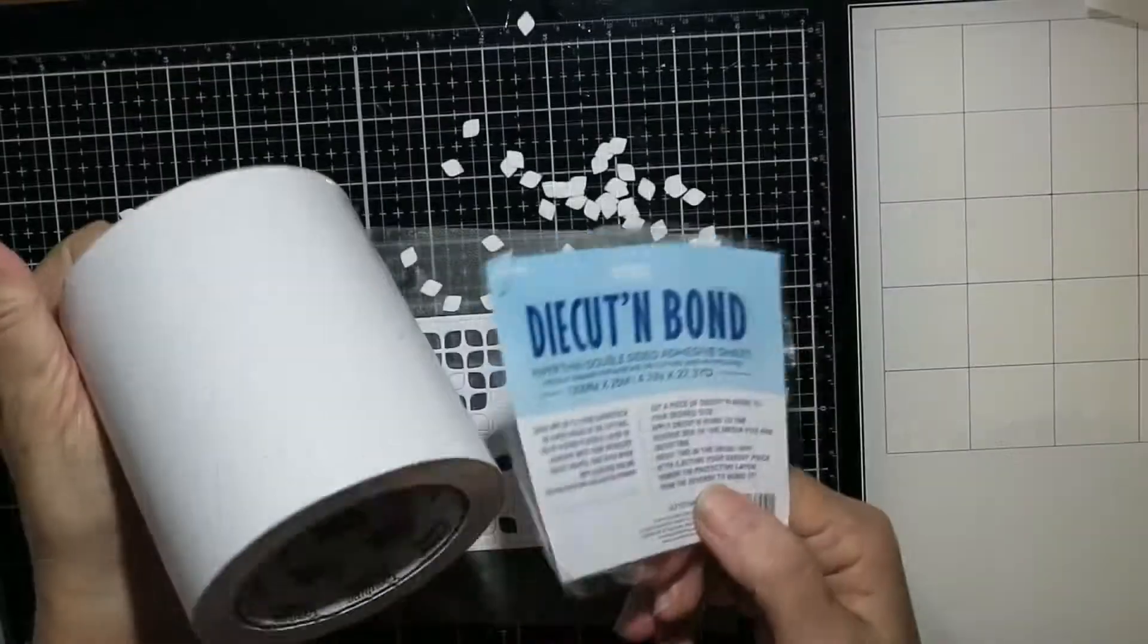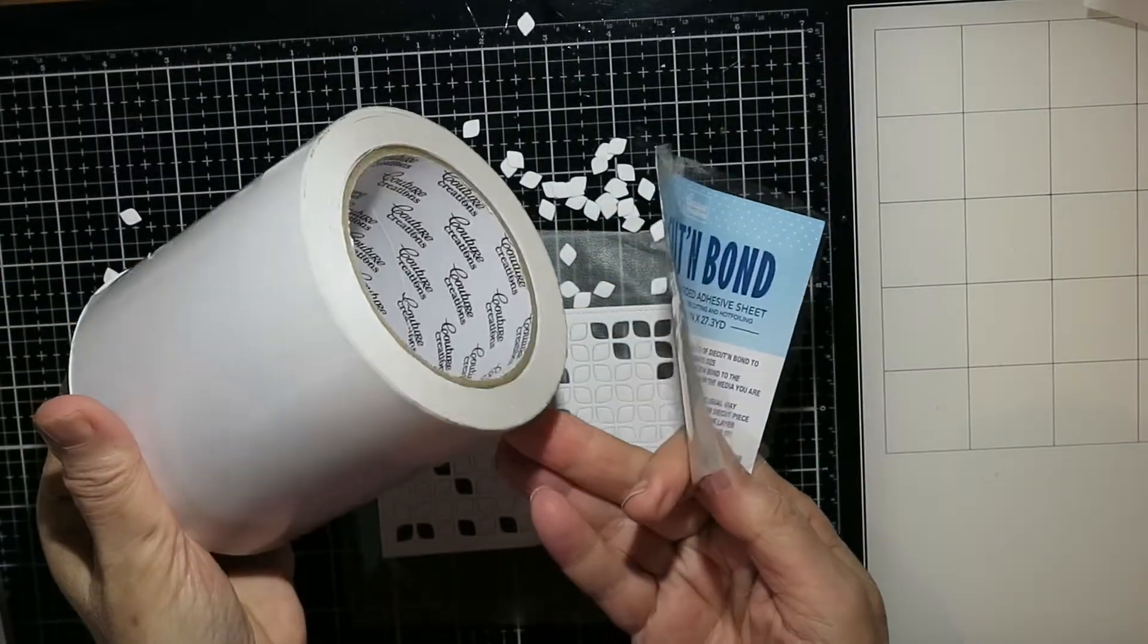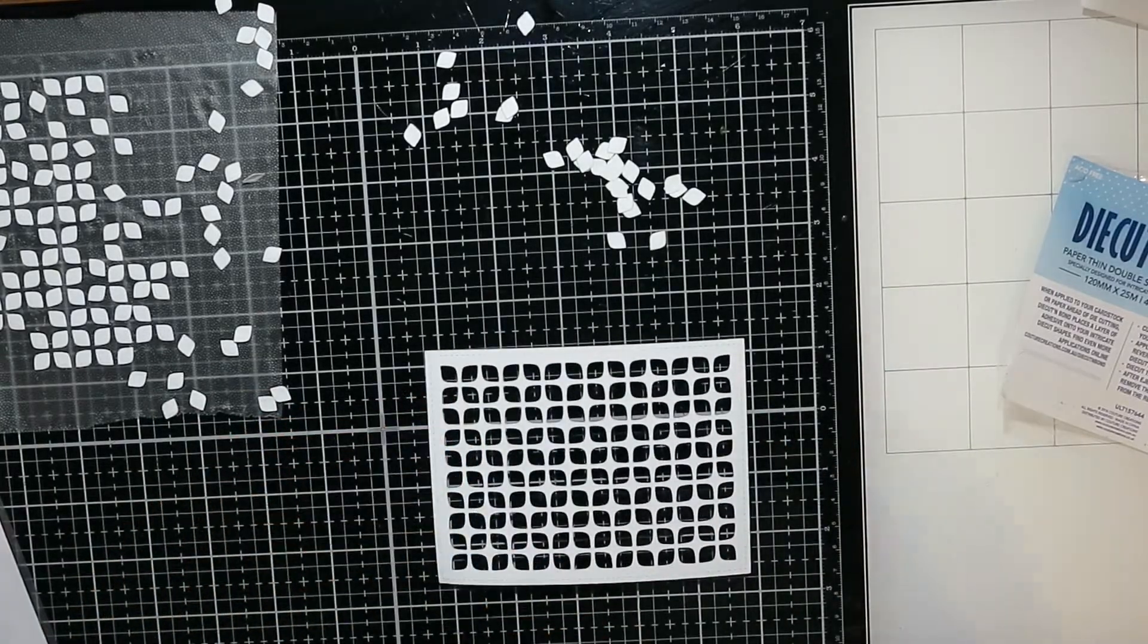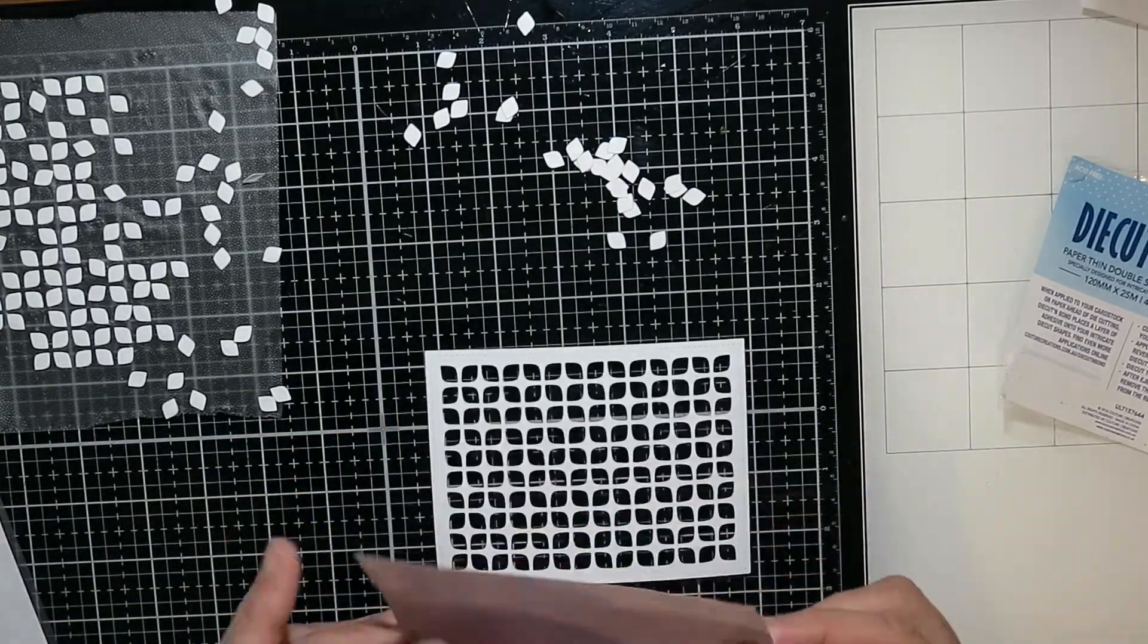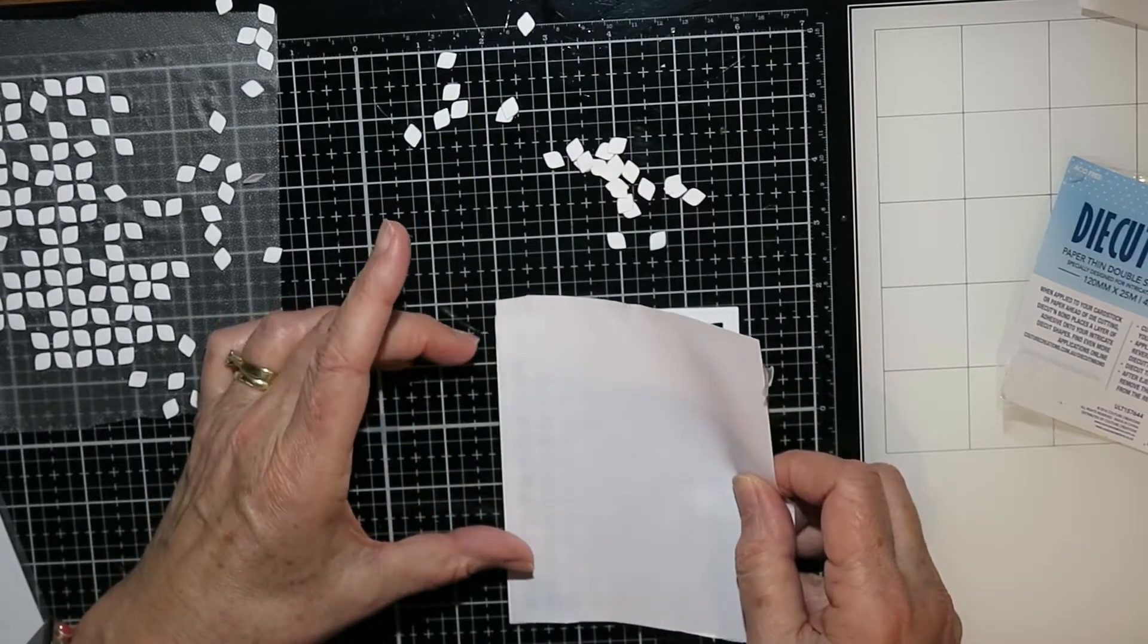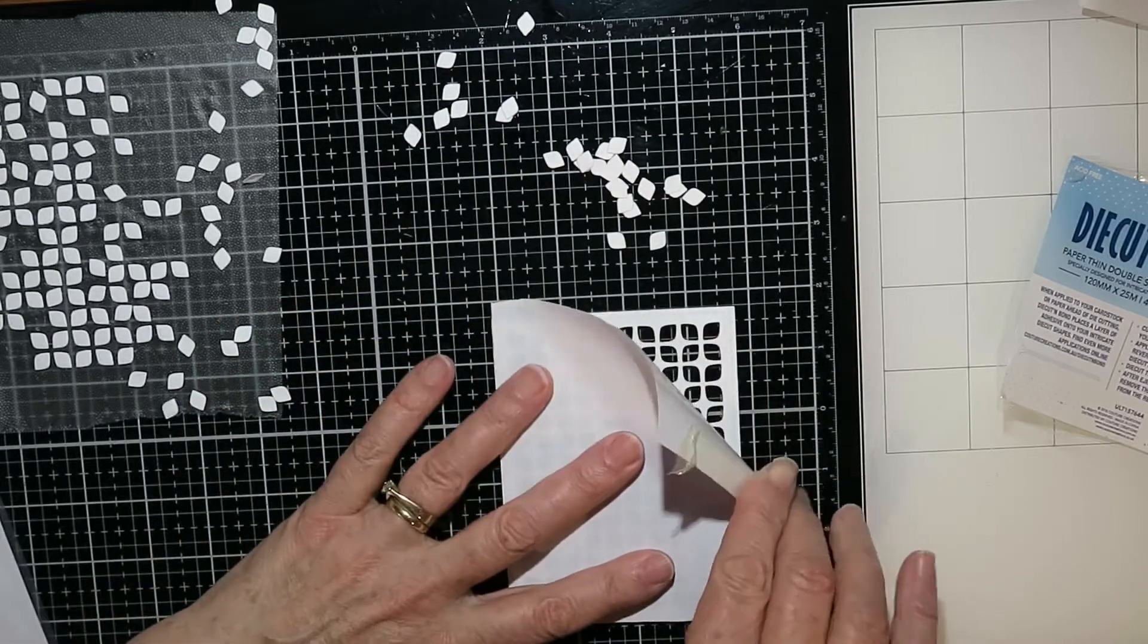I've got this brand new to me Sunny Studios cover die. It's called Furly Frames Retro Petals and I've cut a piece of die cut and bond. It's basically just a double-sided adhesive.